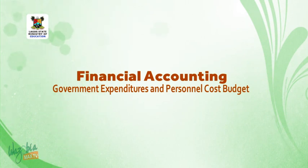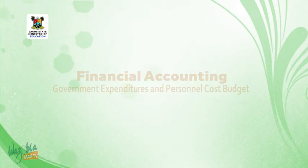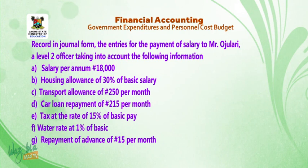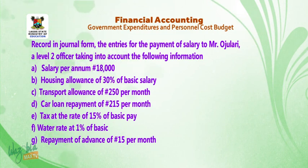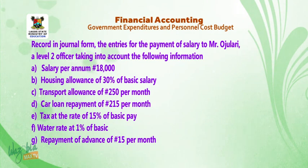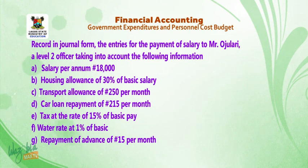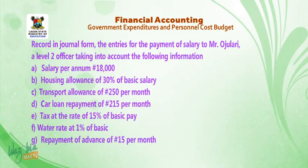Welcome back. Let's take this question. Record in journal form the entries for the payment of salary to Mr. Ojolari, a level 2 officer, taking into account the following information: A. Salary per annum — 18,000 Naira. B. Housing allowance of 30% of basic salary. C. Transport allowance of 250 Naira per month. D. Car loan repayment of 250 Naira per month. E. Tax at the rate of 15% of basic pay. F. Water rate at 1% of basic. G. Repayment of advance of 15 Naira per month.